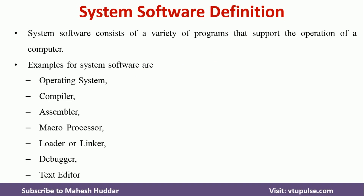For example, if you want to write a C program, you can write it, but if you want to compile and run that program on hardware, we need system software. To compile, we need a compiler, and if you want to run that compiled program on hardware, we need an operating system. Similarly, if you want to convert an assembly language program into machine-understandable language, we need an assembler. The same applies to macroprocessors, loaders, linkers, debuggers, and text editors — these all fall under the system software category.